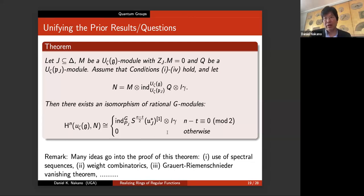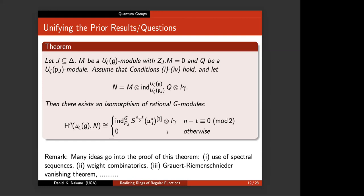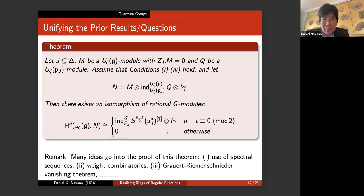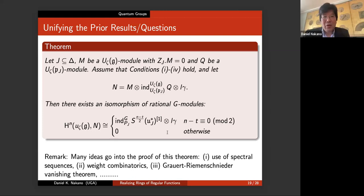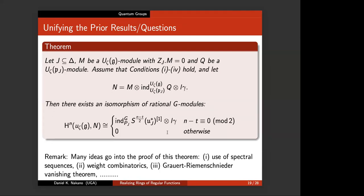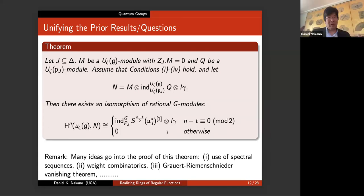Audience question: the Friedlander-Parshall paper wanted a G-algebra A, so is N here just a vector space — is it an algebra? Answer: N is not an algebra right now. It turns out we will actually construct an algebra which will do the job. Right now it's just some N, not an algebra.